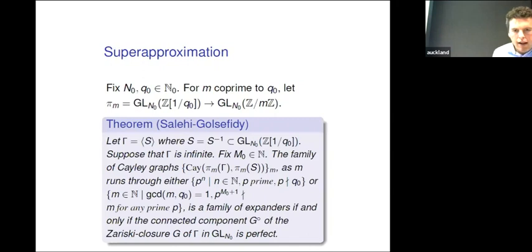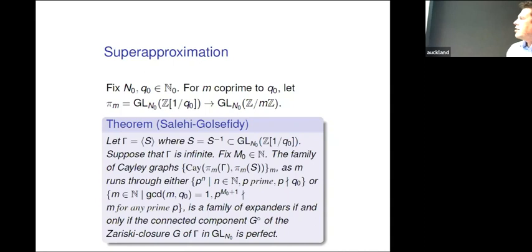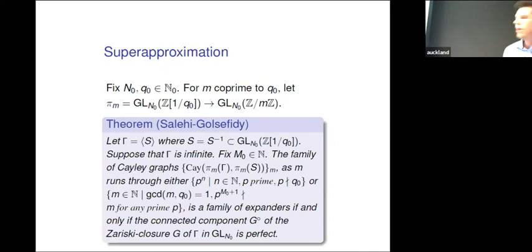This is the main theorem that makes the whole strategy work — a very deep result by Alireza Salehi Golsefidy in a series of two deep papers. What we need to remember is that under certain circumstances, if we can embed our group into a general linear group over Z[1/q_0], then we can get a family of expanders, provided some technical condition is satisfied. This is what makes it work on the Cayley graph side and why we get expansion. This condition is guaranteed by Dipter and by even-one Pianola, and I will now explain why we can get our group into this setting.